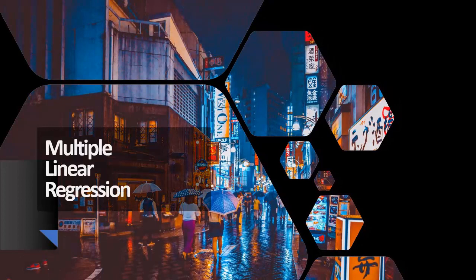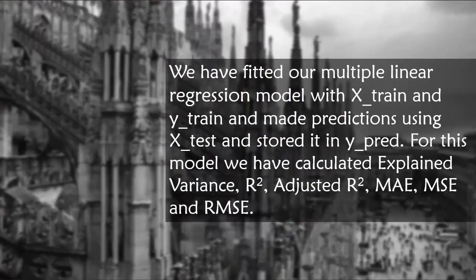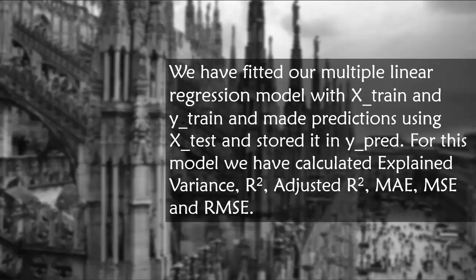Coming to our very first model that is multiple linear regression. Here we have fitted our multiple linear regression model with X_train and y_train and made predictions using X_test and stored it in y_pred. For this model we have calculated explained variance, R², that is the coefficient of determination, adjusted R², MAE that is the mean absolute error, MSE that is the mean squared error and RMSE that is the root mean squared error and this is the procedure we have followed for each and every model.